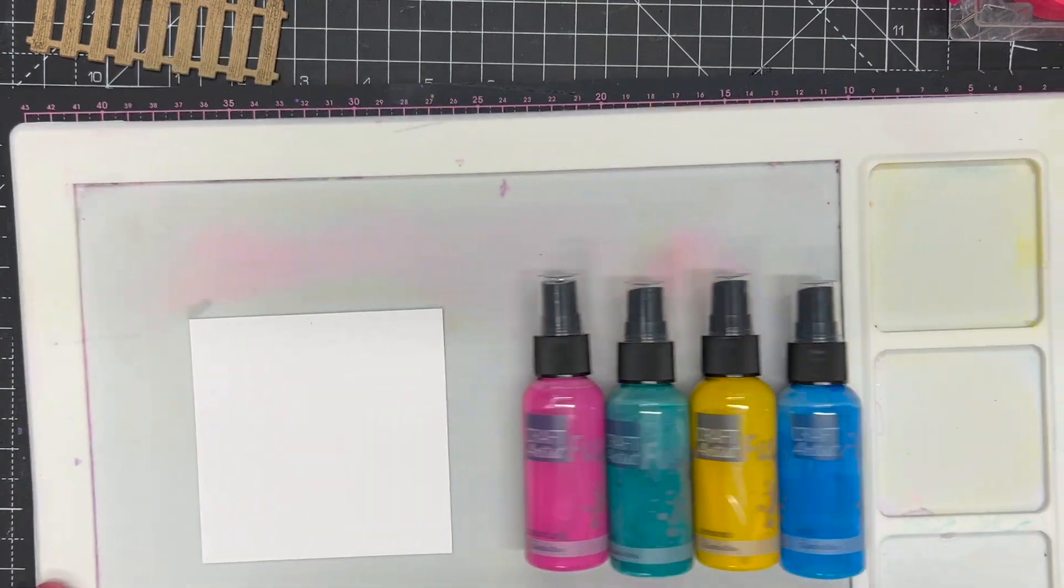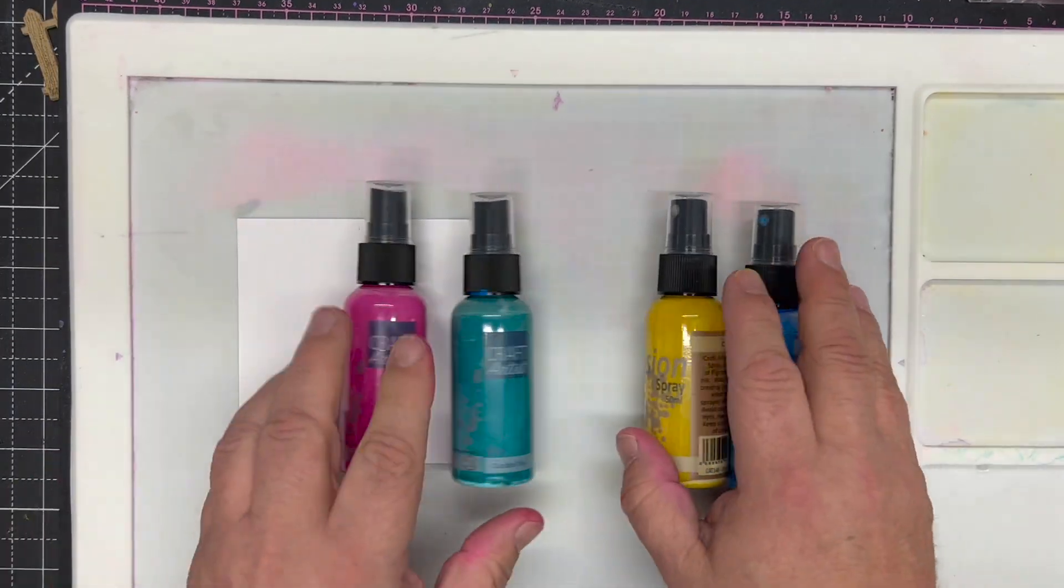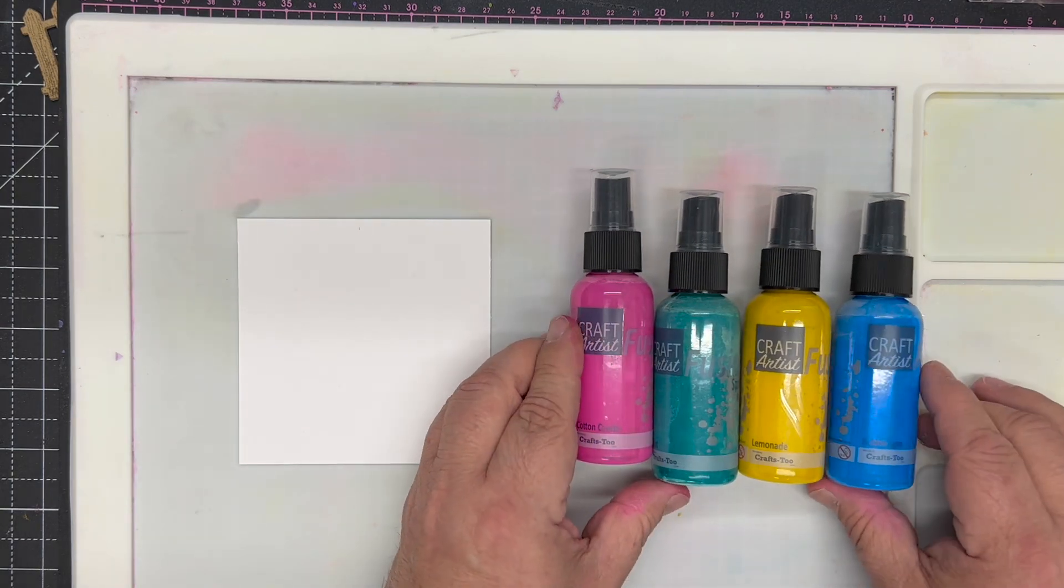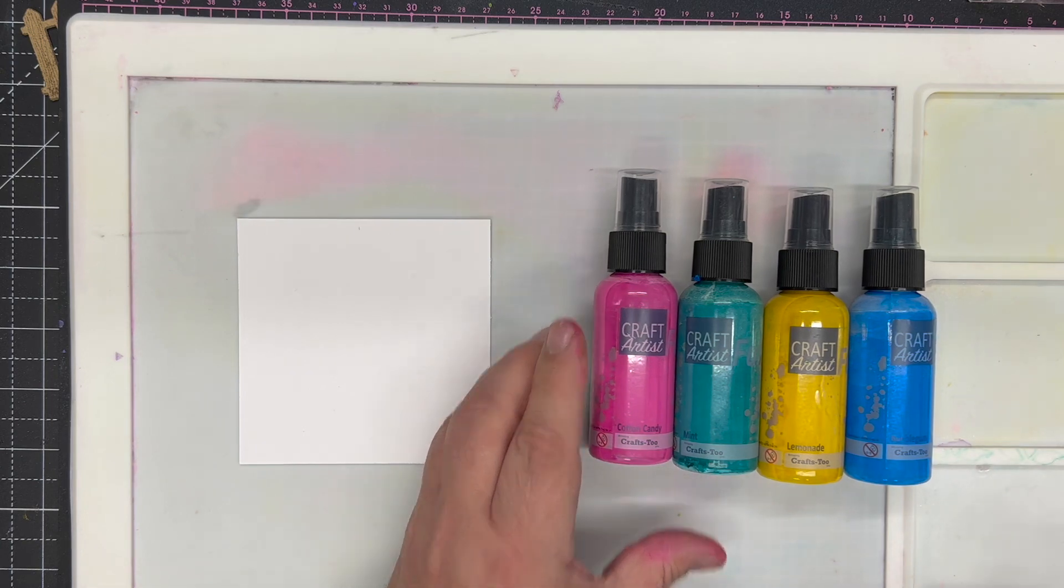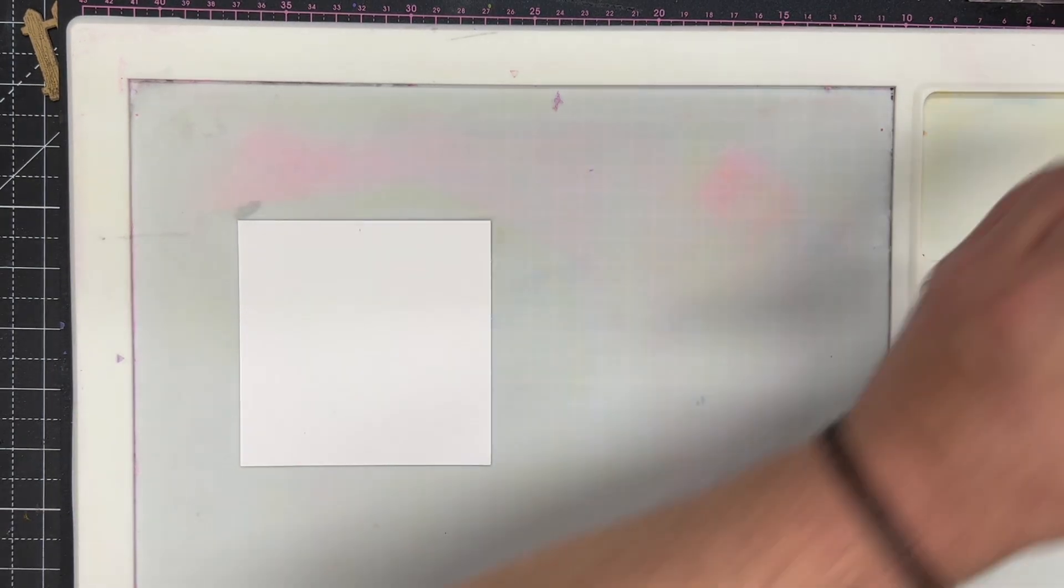I'm just going to bring my media mat in here and I'm going to use four colors, so I'm using the bubblegum, the lemonade, the mint, and the cotton candy. Really, really simple.